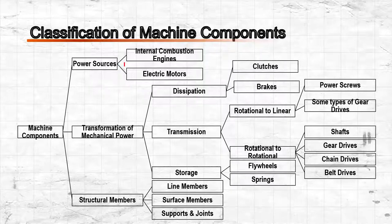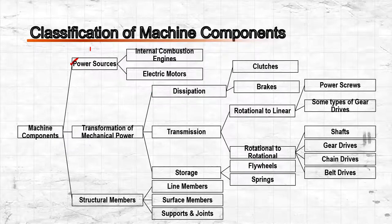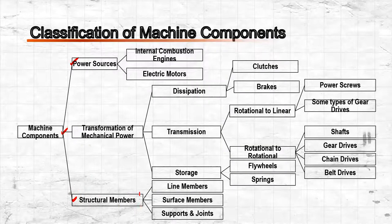A machine is composed of many parts or sub-assemblies, and we can classify these basic components into: power source, components that involve transformation of mechanical power, and structural members such as beams, braces, and supports. For power source, we can have internal combustion engines or electric motors.